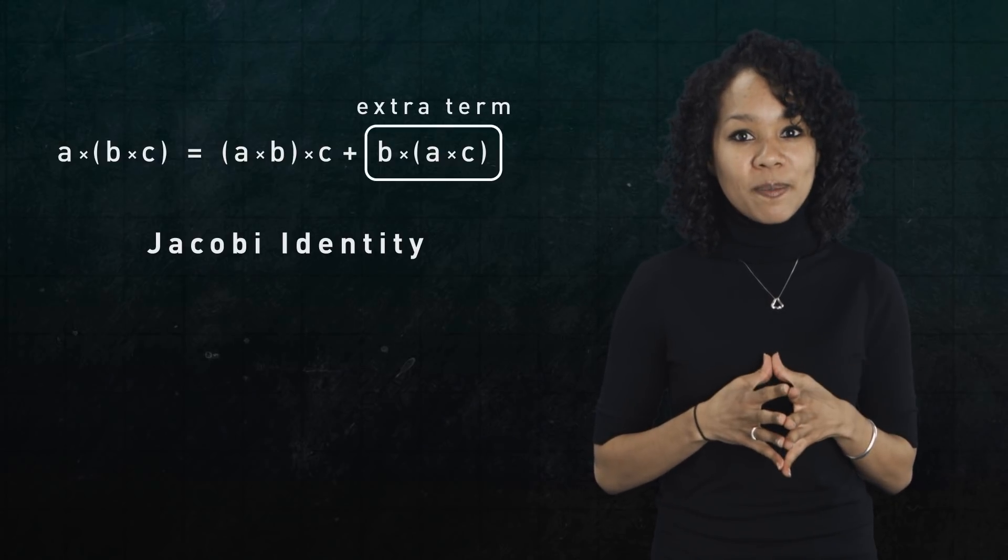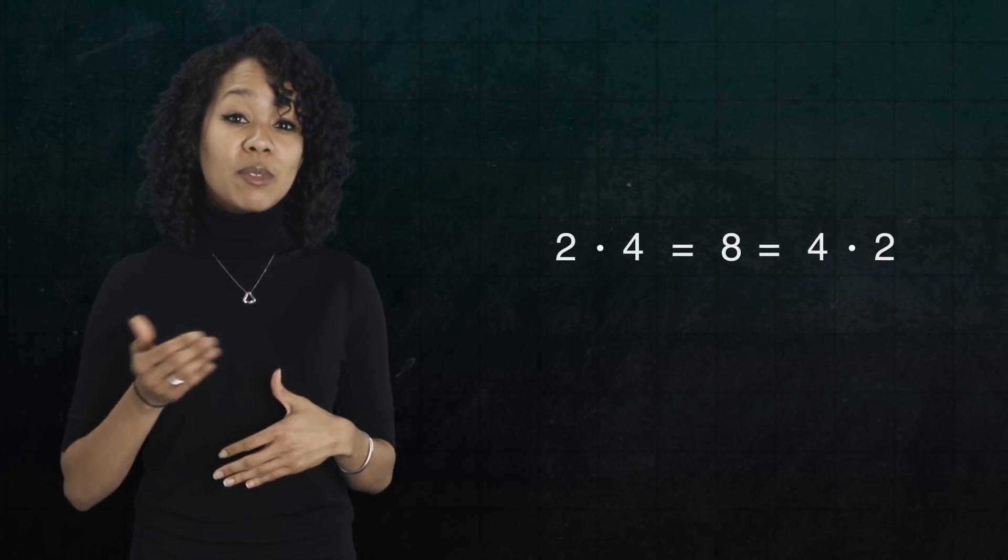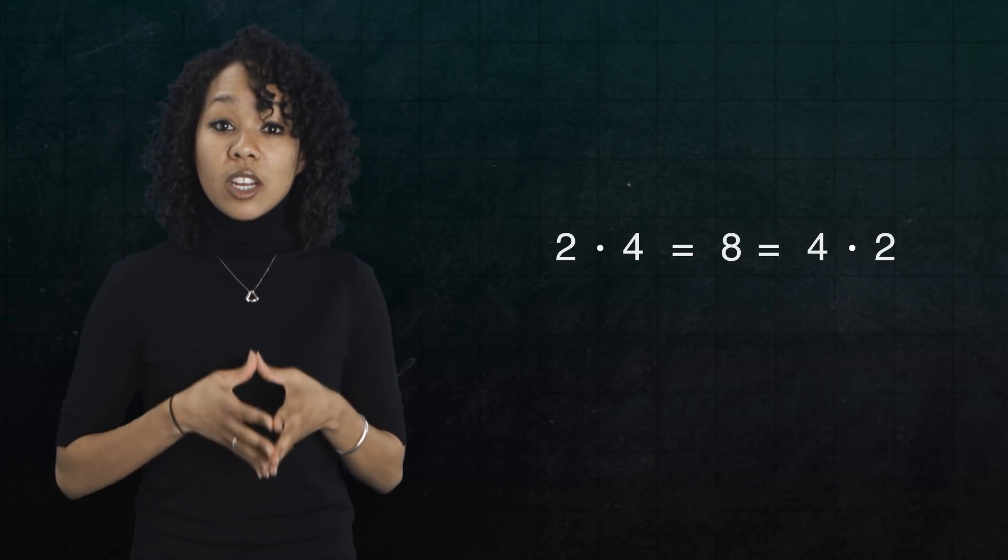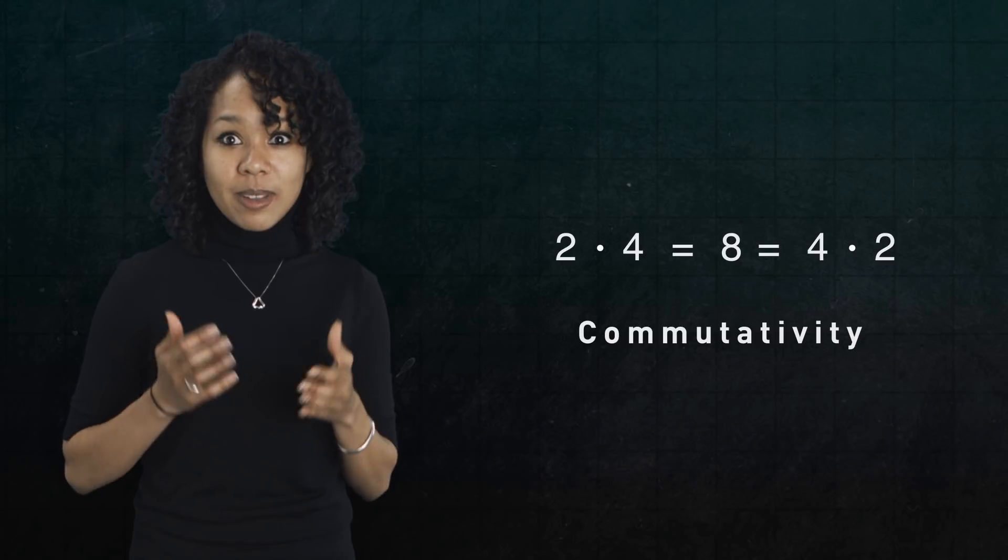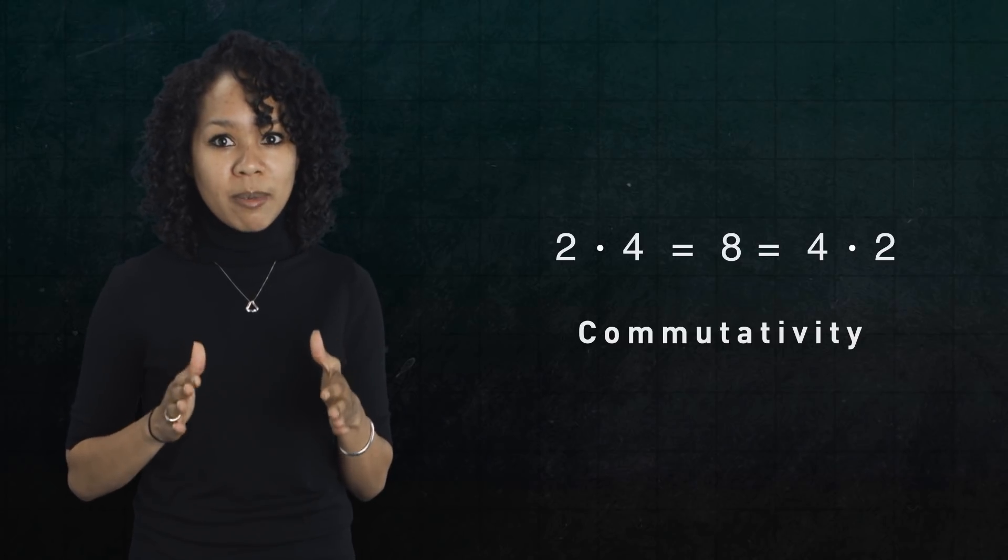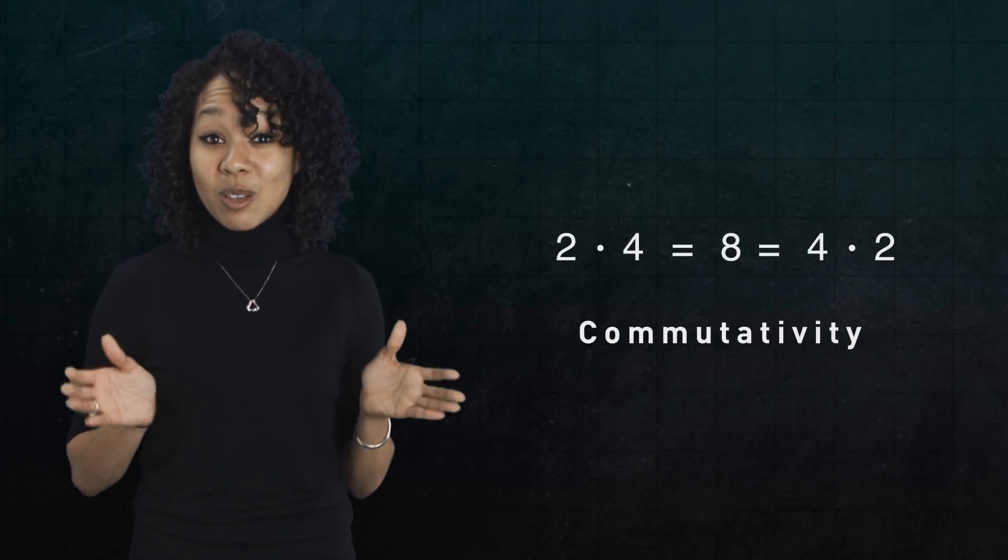And since we're talking about associativity, you might wonder about that other property of real numbers. You know, when multiplying two numbers, swapping their order doesn't change the answer. For example, 2 times 4 is the same as 4 times 2. This property is called commutativity. Now, you might be thinking, why would we give a name to such an obvious fact? But keep in mind, it's a very special property to have. Not everything in life is commutative.